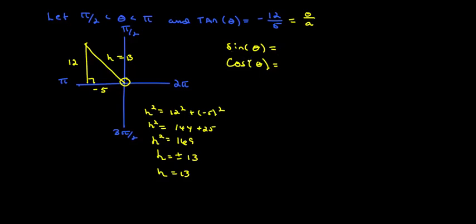Now sine—let's see. Sine is opposite over hypotenuse, so that's 12 over 13. Sine is positive because we're working in quadrant 2. Cosine is adjacent over hypotenuse, and cosine should be negative in quadrant 2.